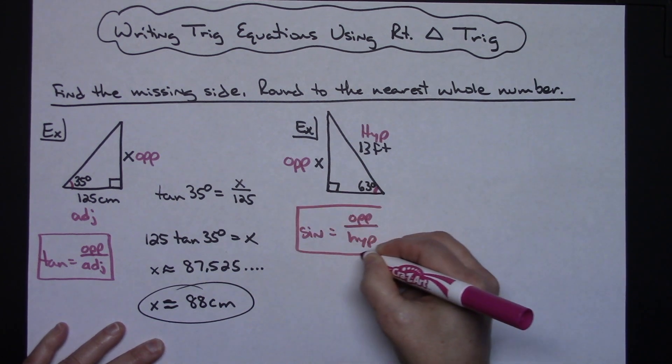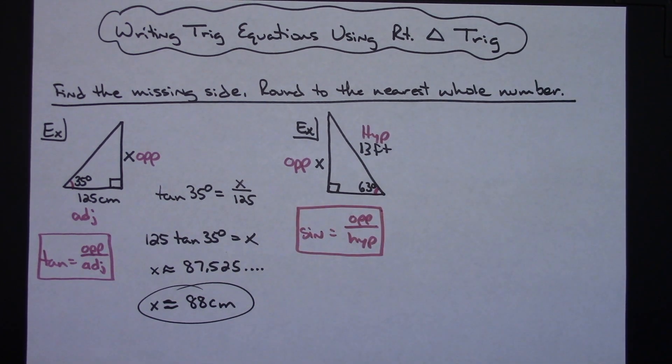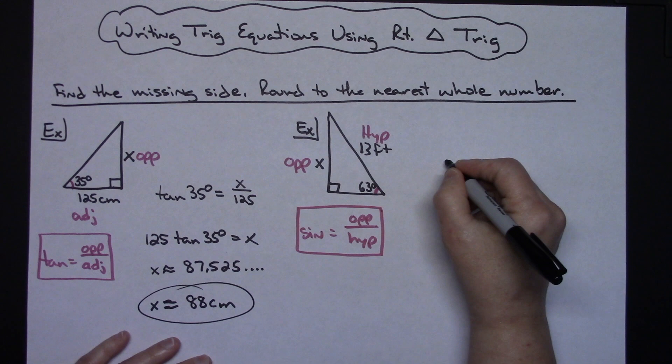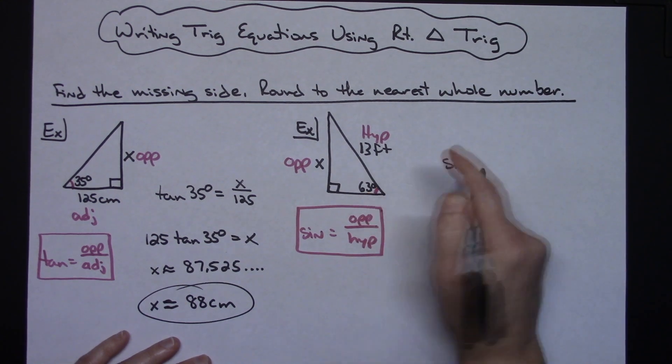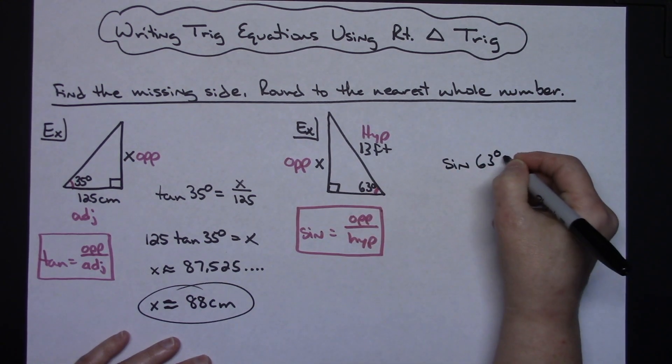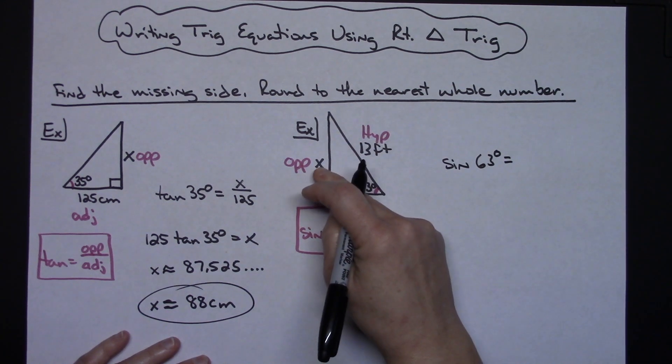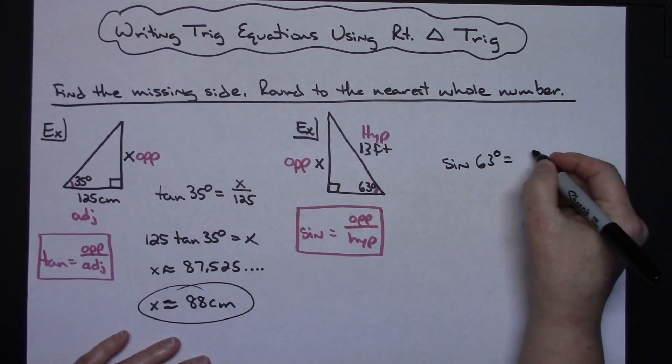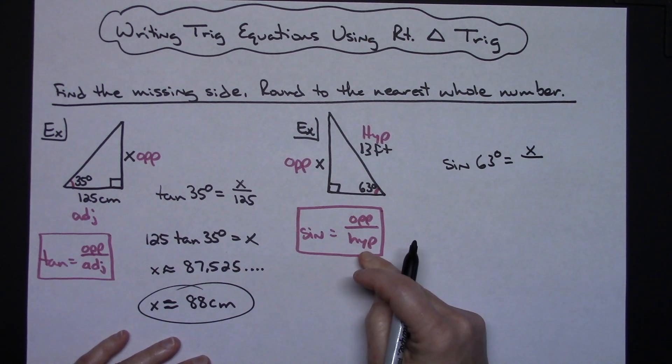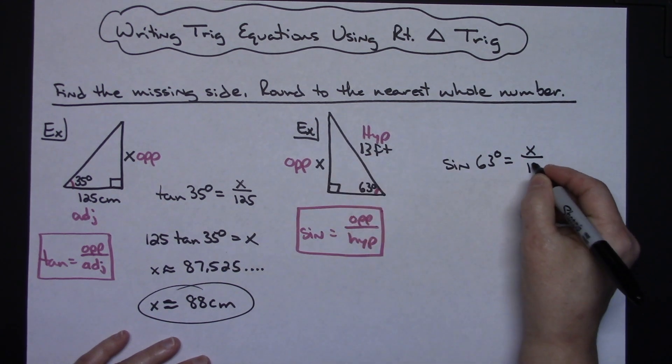That means in my trig equation I'm going to use sine. I'll start with sine of the angle 63 degrees. I know it's opposite over hypotenuse, so the opposite side is X, that goes on top. On the bottom is the hypotenuse, which is 13.